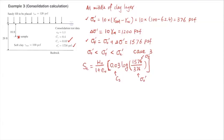Substituting H₀ — the thickness of the entire consolidating layer, which is 20 feet — and E₀ = 1.1 (the initial void ratio as given), we get a primary consolidation settlement of 0.178 feet.